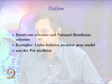Welcome everyone to lecture number 10 on non-linear dynamical systems. We will continue with the Bendixson criteria and the Poincaré-Bendixson criteria. In particular we will see important examples: one is the Lotka-Volterra predator-prey model and also the Van der Pol oscillator. Let us start with the Lotka-Volterra predator-prey model.